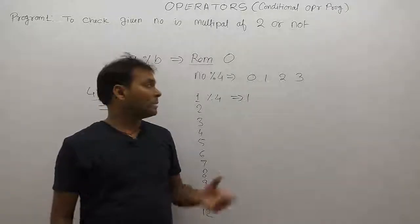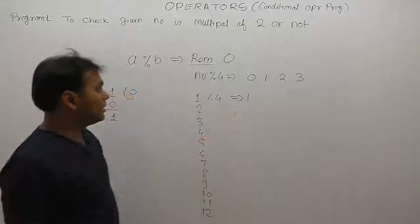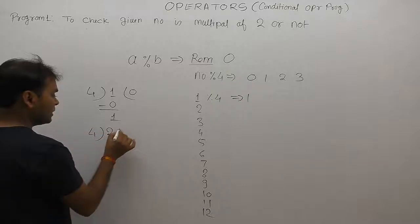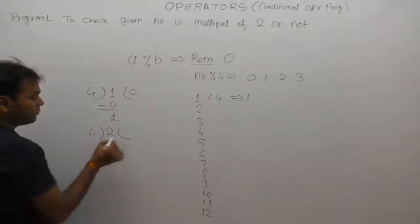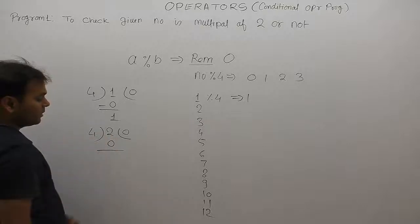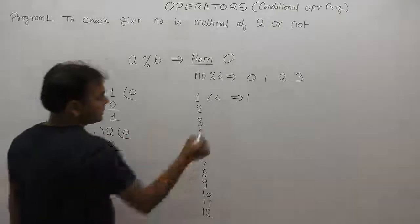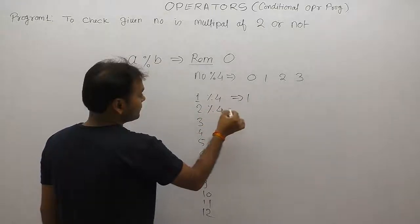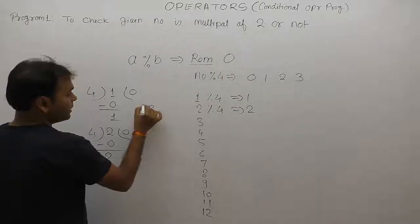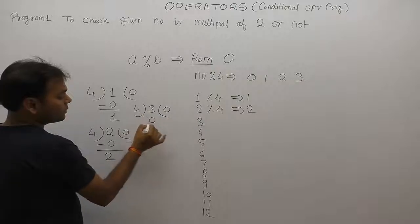We are concluding some logic based on that operation. Performing all division operations and observing the remainders. The multiplication must be less than the numerator value. For 3 divided by 4: 0 multiplied by 4 is 0, so remainder is 3.